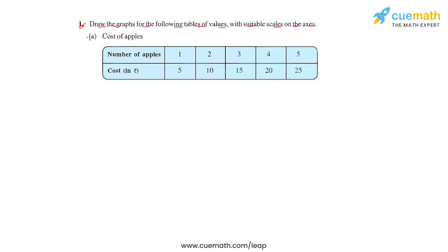In the first question of this third exercise, we'll have to draw graphs for the following set of tables of values with suitable scales on the axis. Let us take the first table on the canvas. Here in part A of this question, we have the cost of apples and the number of apples. Using these values, we'll have to draw a line graph on a graph sheet.